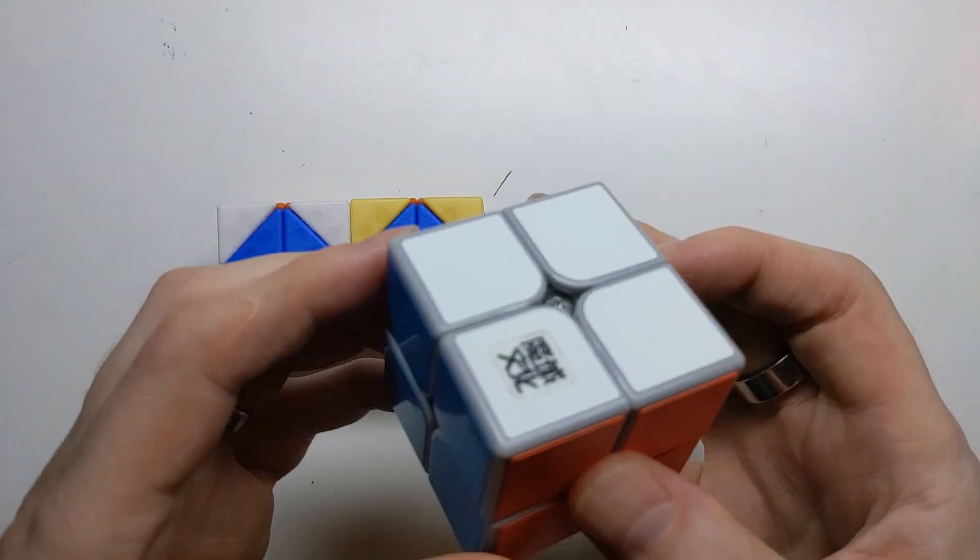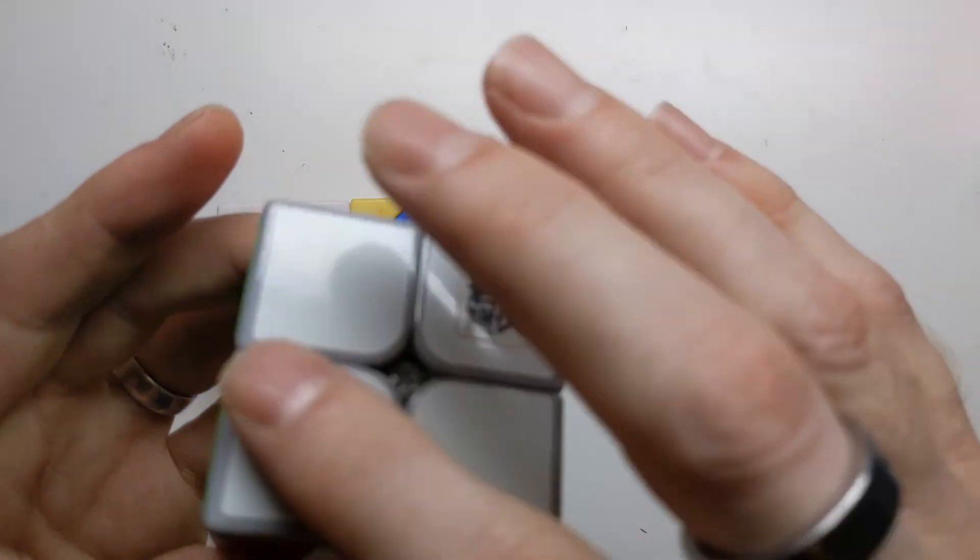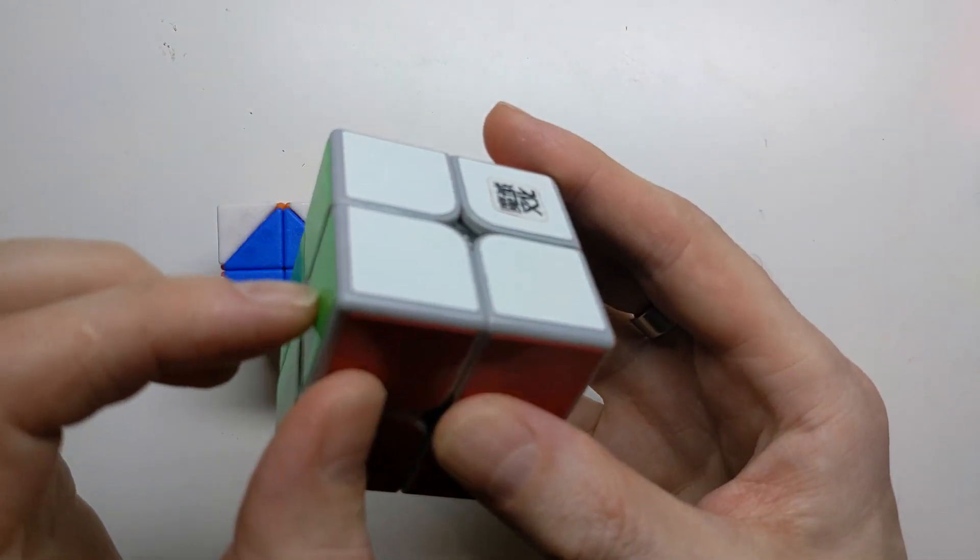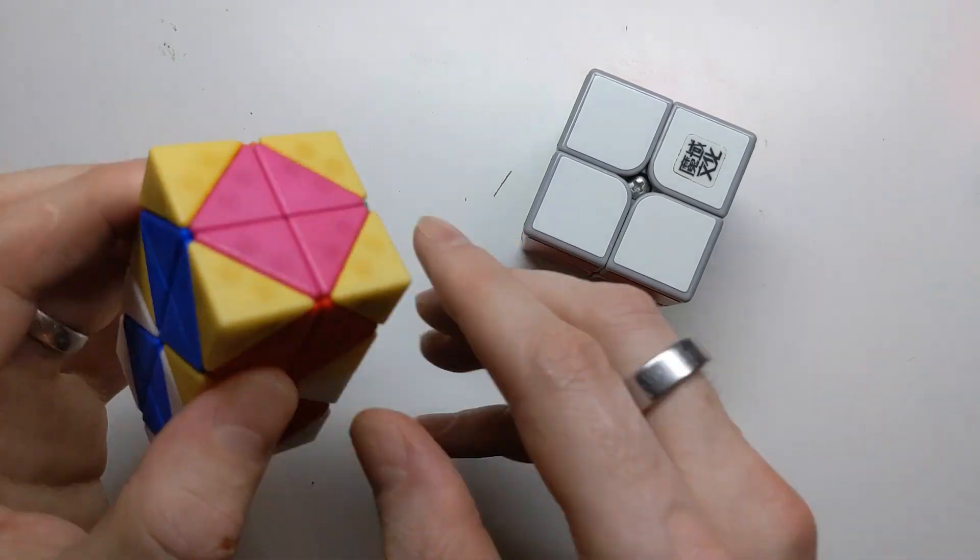So let's compare that with a regular 2x2x2, the three-dimensional puzzle, which has eight cubes, four on the top and four on the bottom, each of which has three colors. So the three-dimensional puzzle has three colors on each piece, and the four-dimensional puzzle has four colors on each piece.